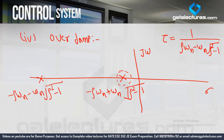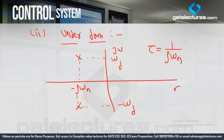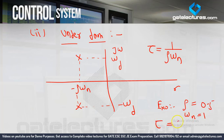Assuming omega_n = 1: for underdamped, suppose zeta = 0.5, then tau = 1/(0.5 × 1) = 2. For critically damped, zeta = 1, so tau = 1/omega_n = 1. So we can clearly see that tau of underdamped is greater than tau of critically damped.